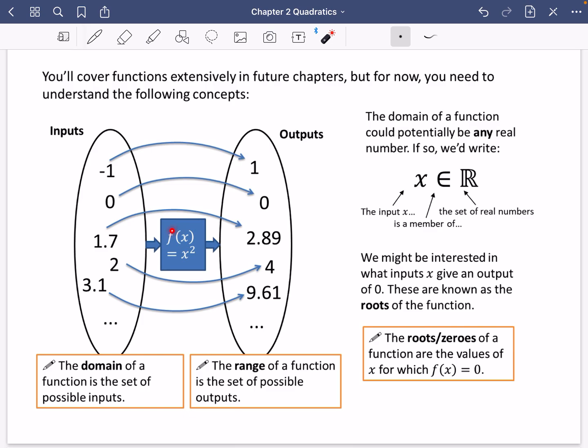You can see our function here is a squaring function. It's taking an input x and producing x squared. Minus 1 is going to 1, 0 squares to 0, 1.7 squares to 2.89, 3.1 squares to 9.61, etc. We use this word range. The range of a function is the set of possible outputs.